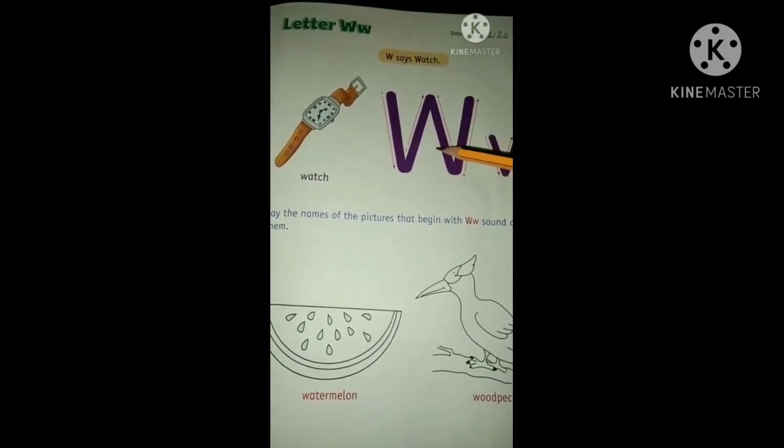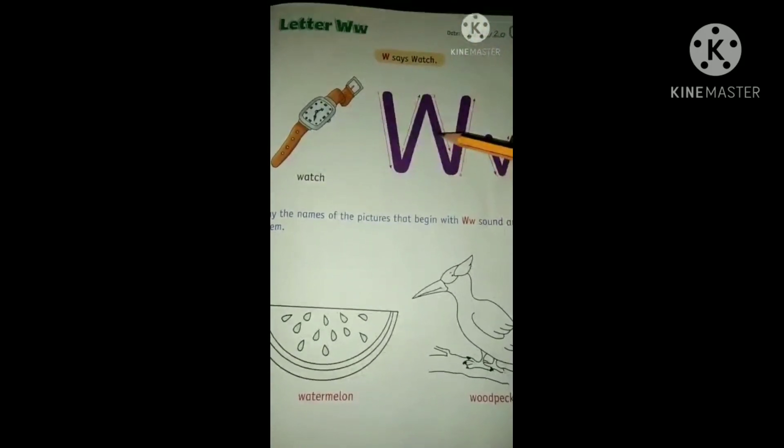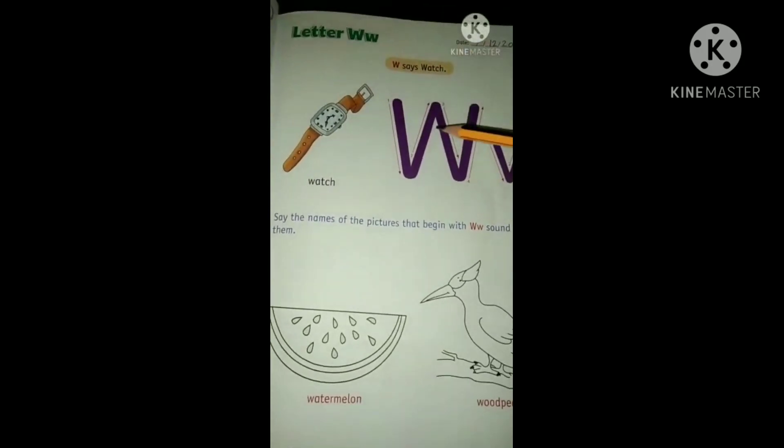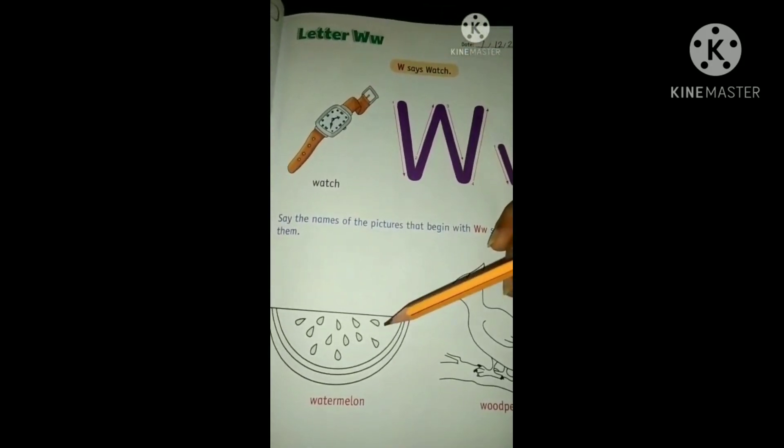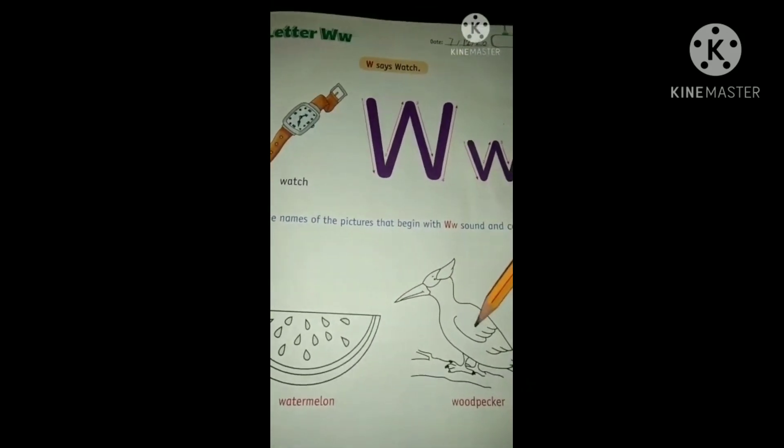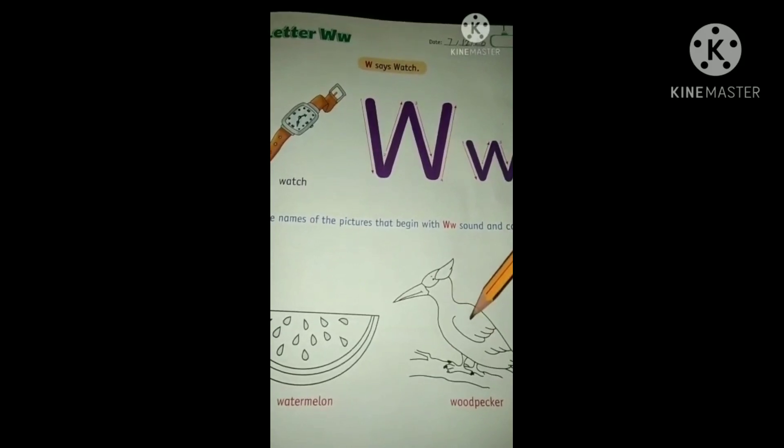W says wa. W for watch, W for watermelon, W for woodpecker. Do you know why this bird is called woodpecker?